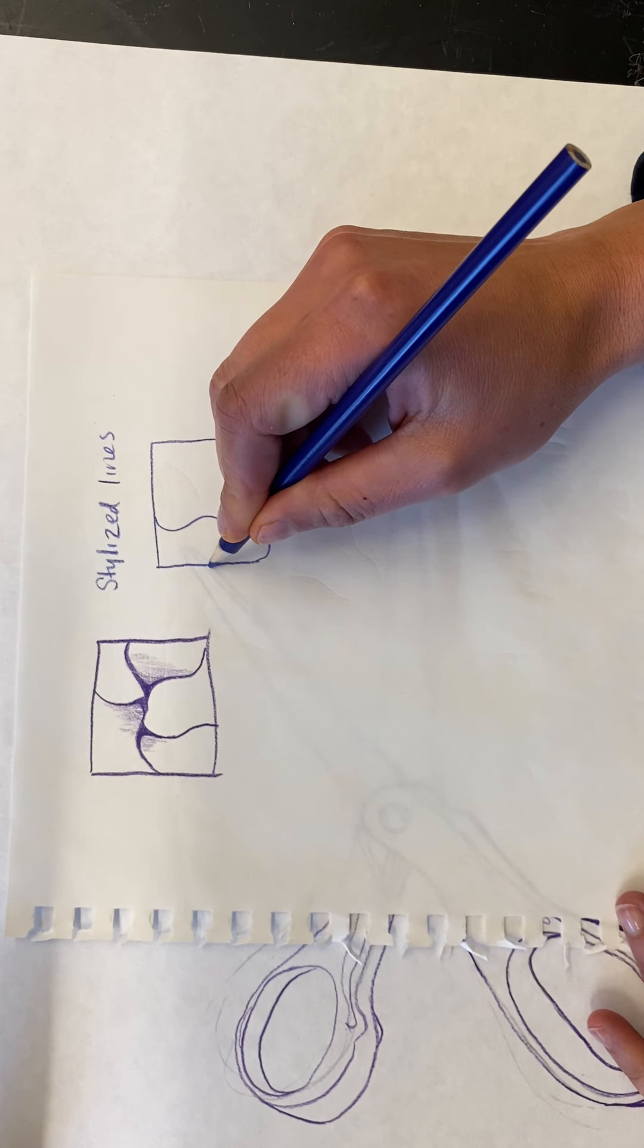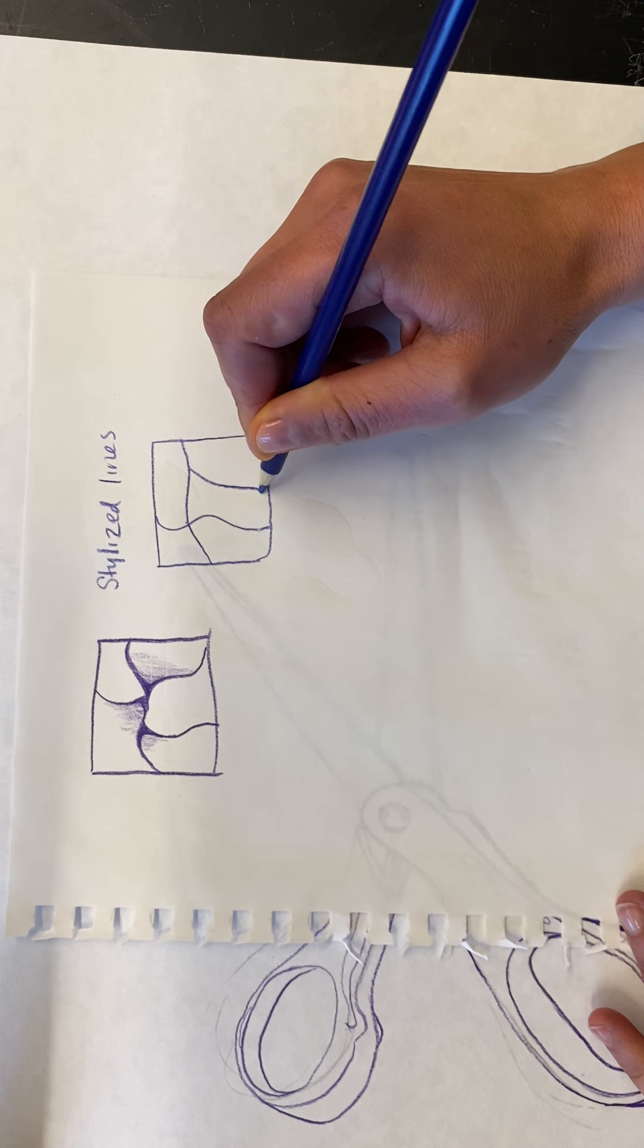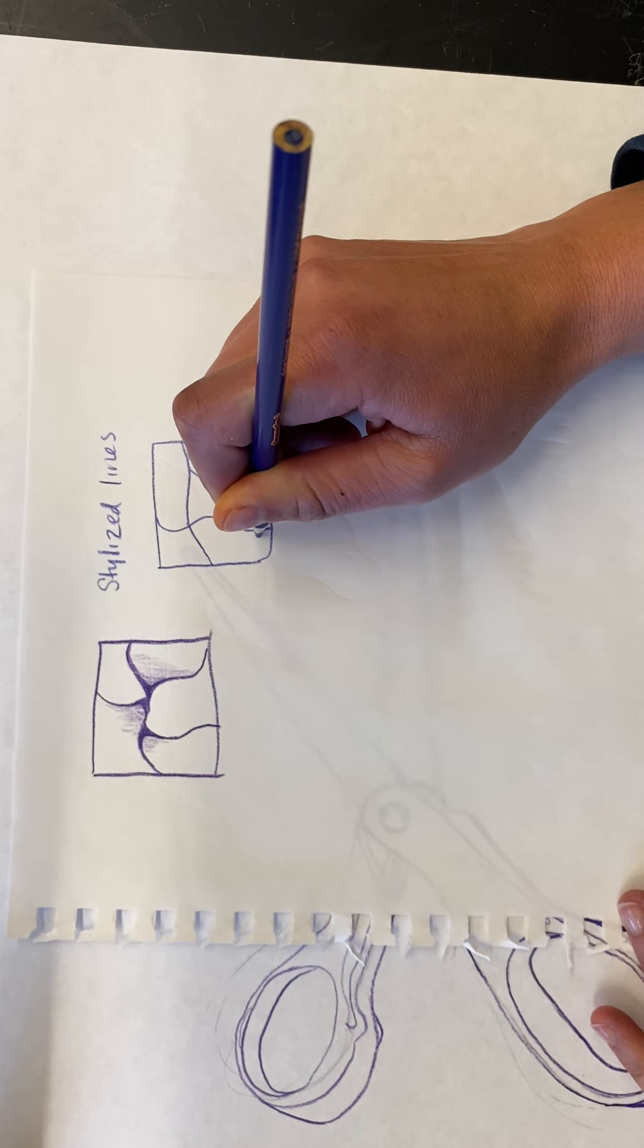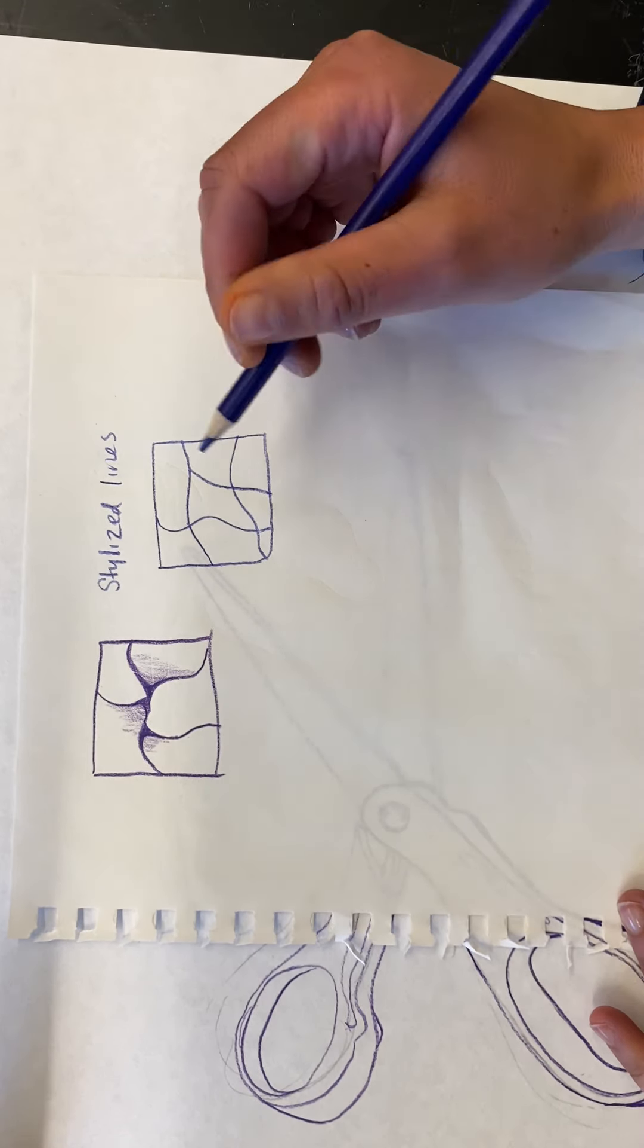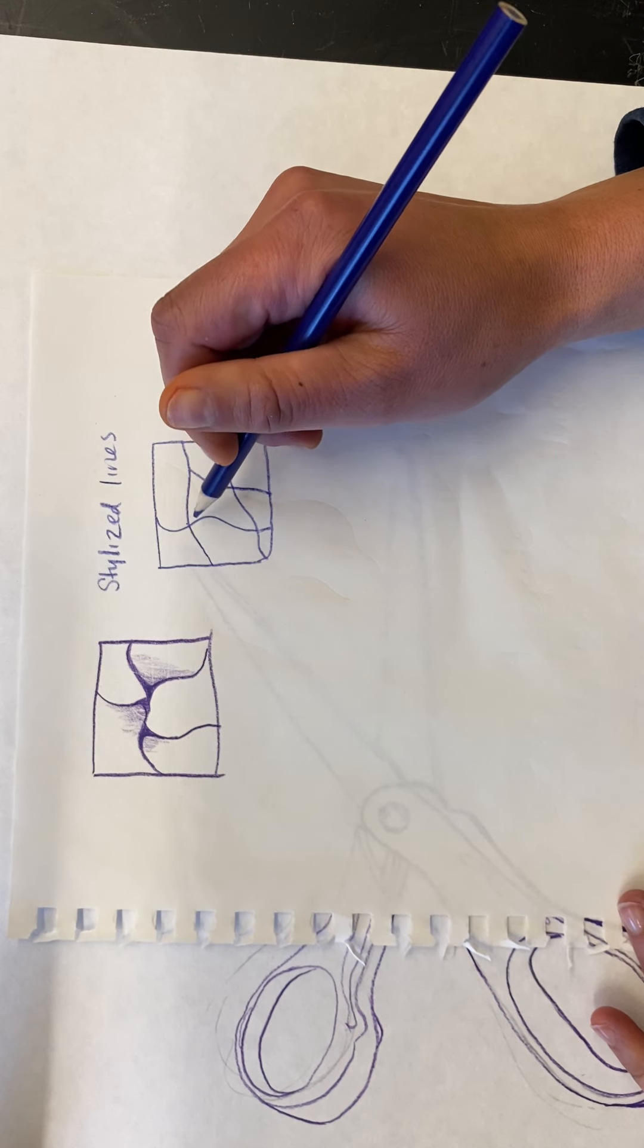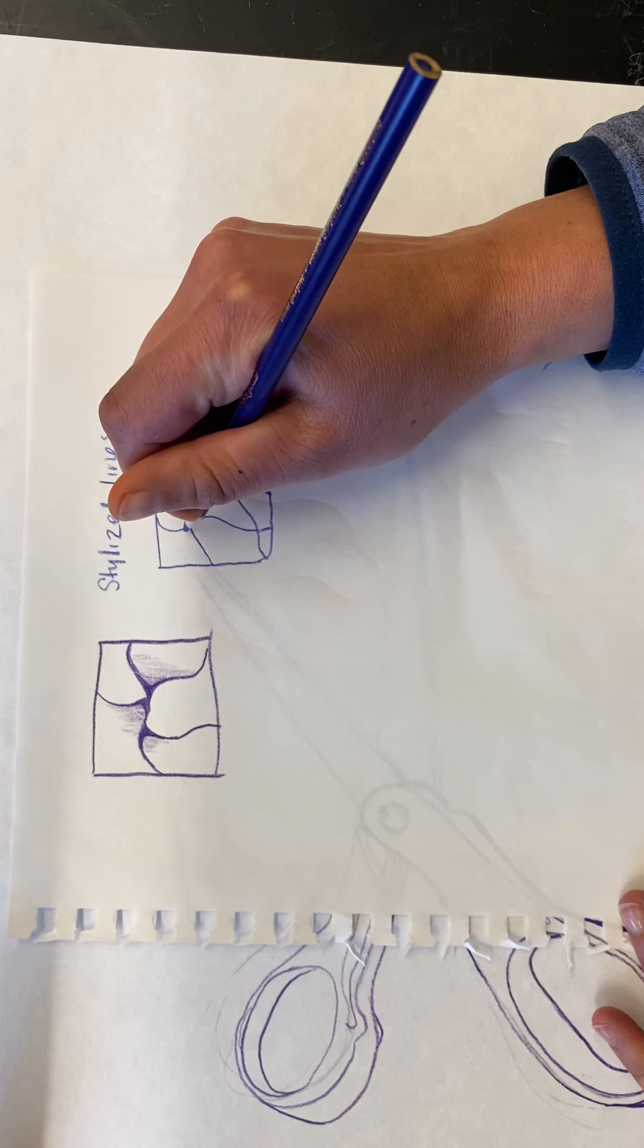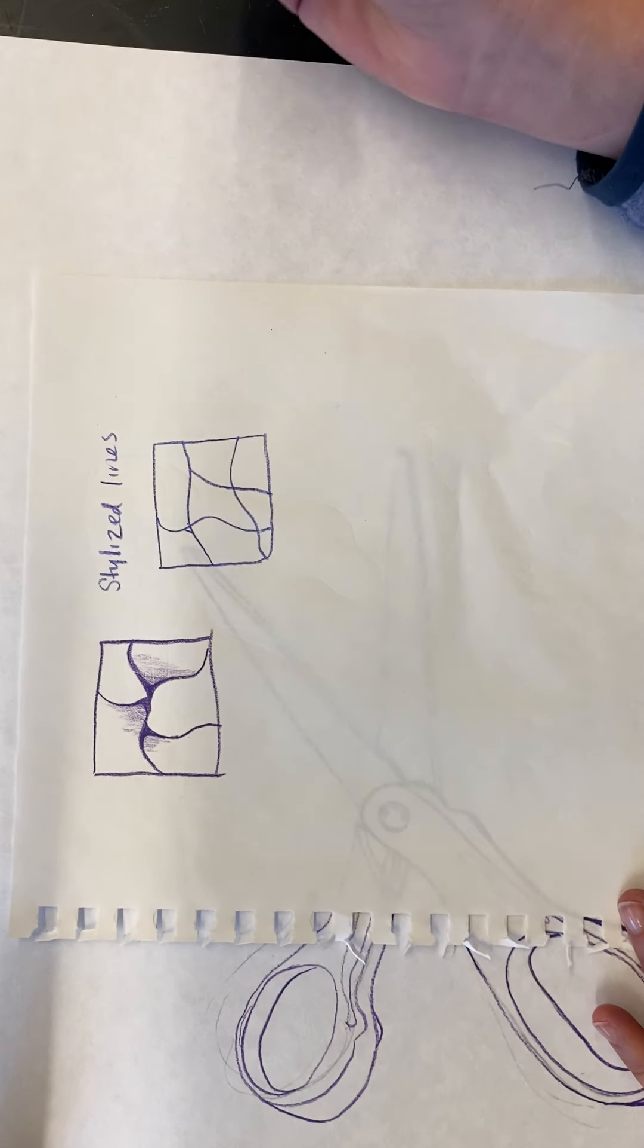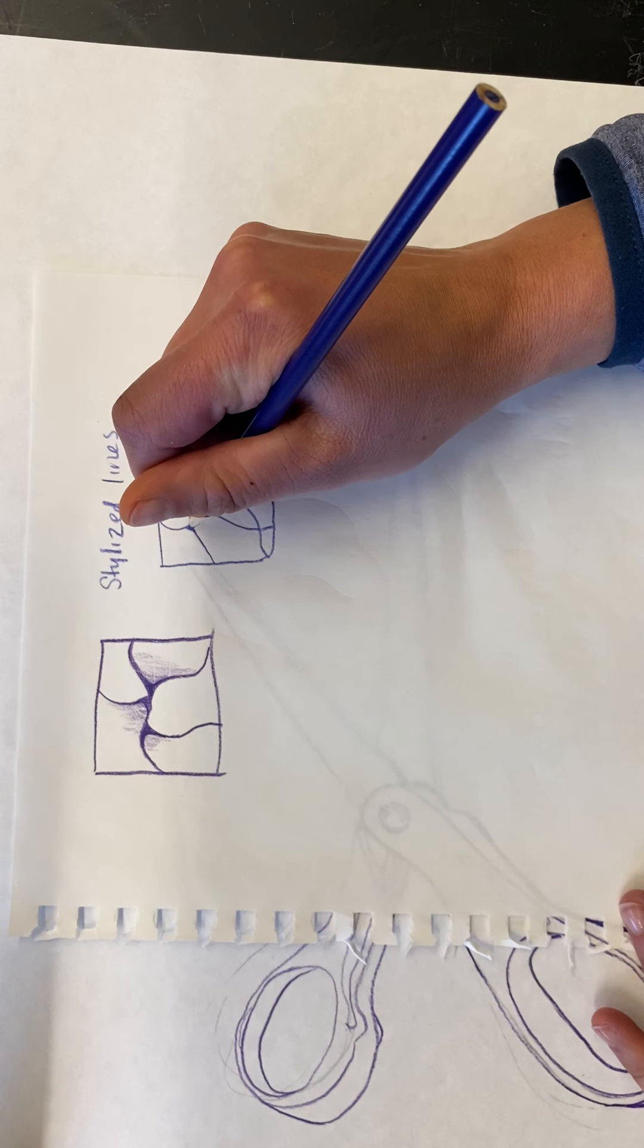I'll just draw some lines in this box here. Now I'm going to look at the intersection of lines and draw a triangle between the intersections, and then I'm going to fill